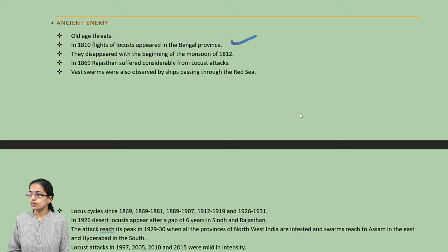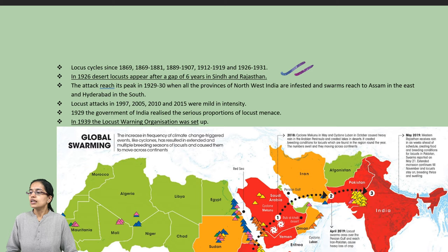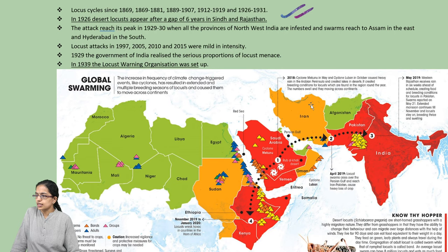In 1869, Rajasthan suffered huge losses. There were huge swarms which affected the regions of India, the Northwest Province, and also the regions of Pakistan.